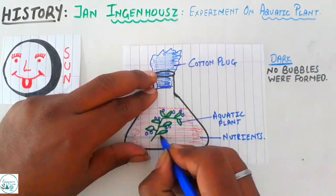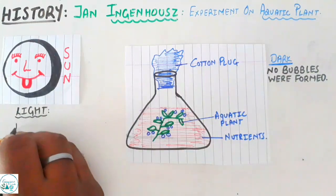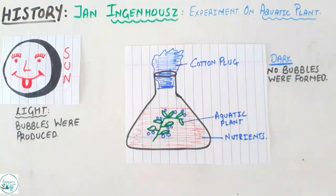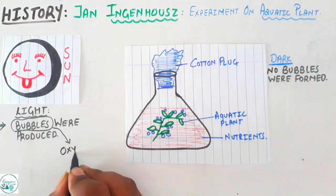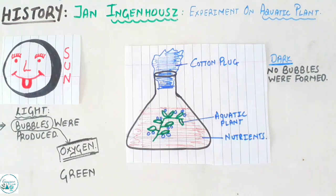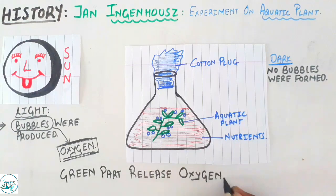But if the same setup was introduced or placed in daylight before the sun, it was found that on the surface of the leaf, around the leaf, bubbles are produced. So in the light, bubbles were produced around the leaf and later on it was found that the bubbles were of oxygen. Thereby Ingenhousz concluded that green parts of the plant are necessary for releasing oxygen.